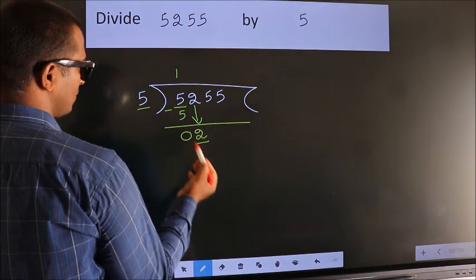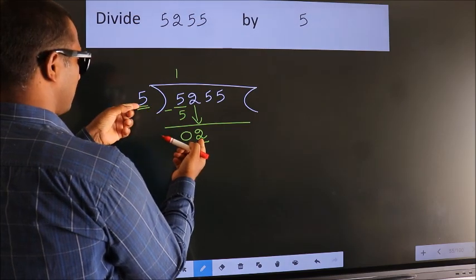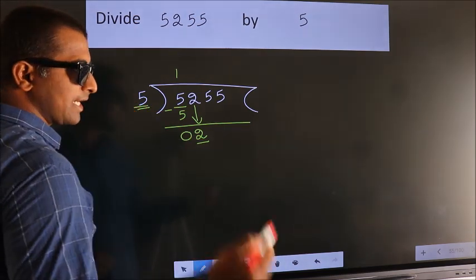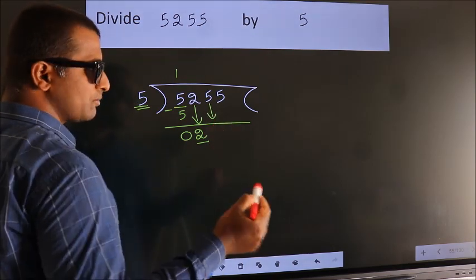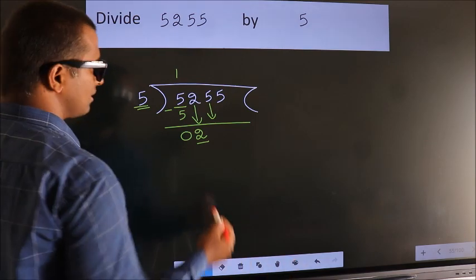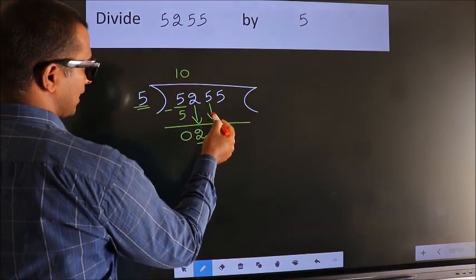Here we have 2, here 5. 2 is smaller than 5. So we should bring down the second number. And the rule to bring down the second number is put 0 here. Then only we can bring down this number.